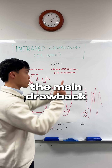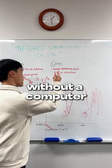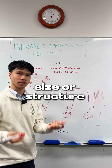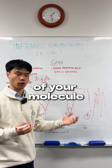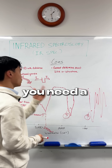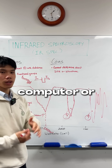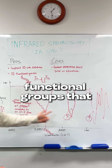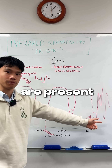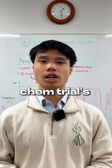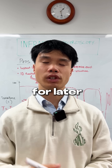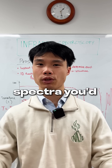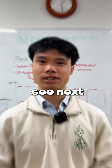The main drawback of IR Spec is that without a computer or database, you cannot figure out the exact size or structure of your molecule — all you can find out is which functional groups are present. So if your chem trial is coming up, save this for later and vote in the comments for which spectra you'd like to see next.